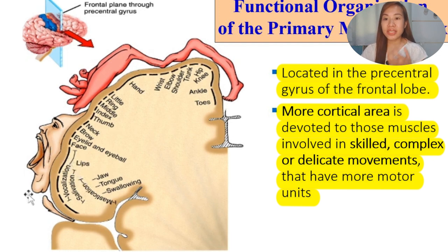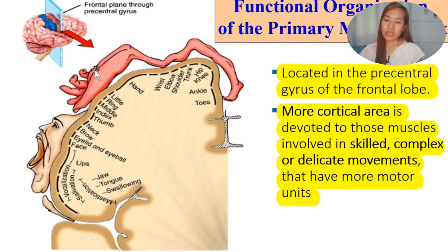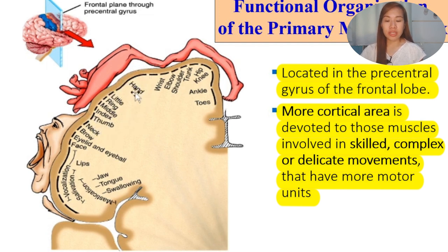Even the lips have skilled, complex, or delicate functions - such as talking, eating, and other functions. We have the face, eyelid, eyeball, eyebrow, and neck. We also have the thumb, index, middle, ring, and little finger. If you try to measure the cortical area assigned just for the hand, it's really very large, because we have to devote more cortex to muscles with more skilled, complex, or delicate movements. For the wrist, elbow, shoulder, trunk, hip, knee, ankle, and toes - this is the functional organization of the primary motor cortex.